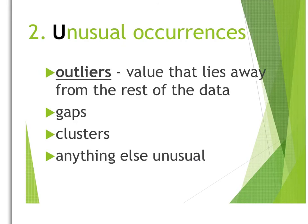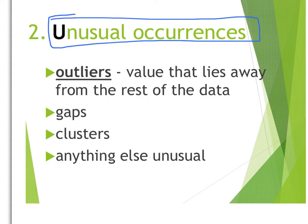Secondly, we need to describe anything that occurs that is unusual. An unusual occurrence might be an outlier — a data value that's either very much to the left or very much to the right of your data, away from all of your points. Or you might have gaps in your data, or maybe there are clusters of data. Anything that you see that might be considered unusual.